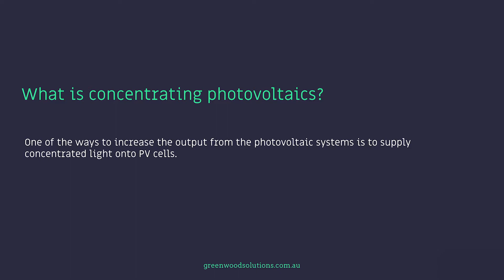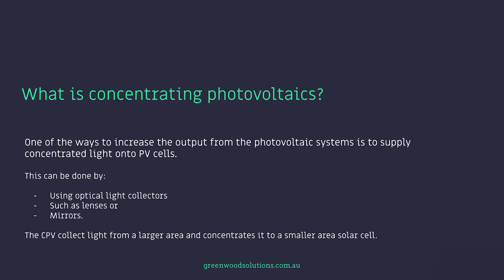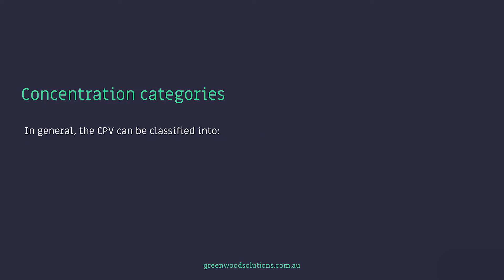One of the ways to increase the output from a photovoltaic system is to supply concentrated light onto the actual PV cells, and this can be done by using optical light collectors such as lenses or mirrors. The CPV — concentrating photovoltaics — collects light from a larger area and concentrates it to a smaller area solar cell. In general, the CPV can be classified into low concentration, medium concentration, and high concentration.